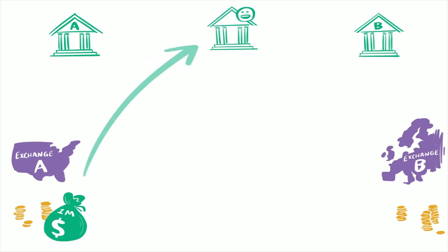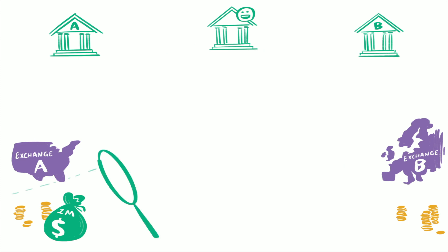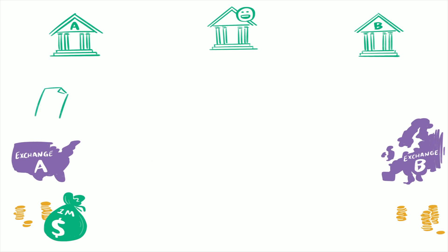You move the money from Bank A to your bank, and then another transfer from your bank to Bank B. Exchange A checks your exchange account, and if they agree there is at least $1 million there, Exchange A tells Bank A to move the money. But that still may go through a third party called a custodial bank.